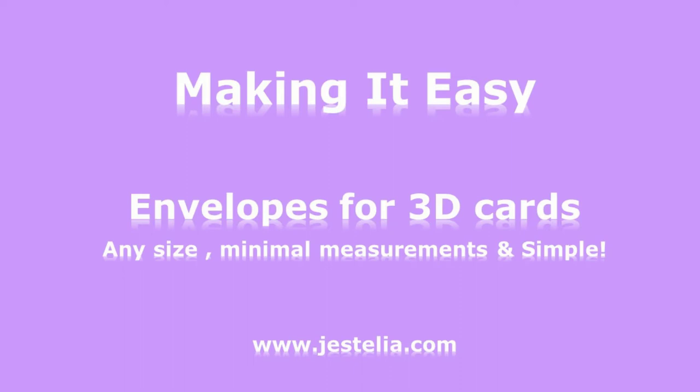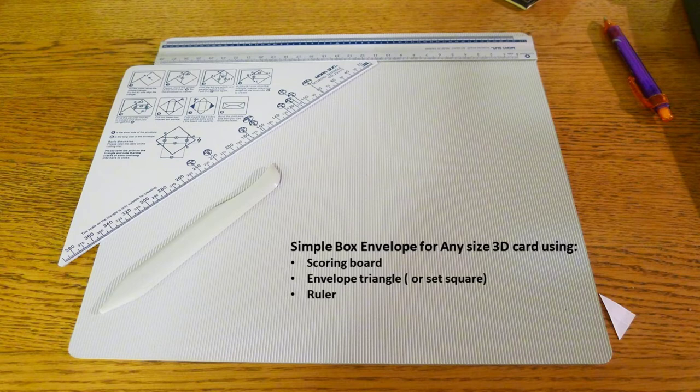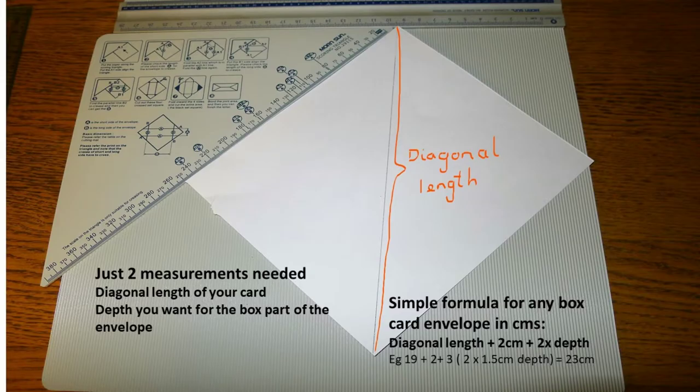So the first thing that you need is a scoreboard, and I had one for Christmas complete with the envelope triangle, although a set square would do very nicely, and of course you will need your trusty ruler. Now it's actually only two measurements needed, the diagonal length across your card and the depth you want for the box part of the envelope.